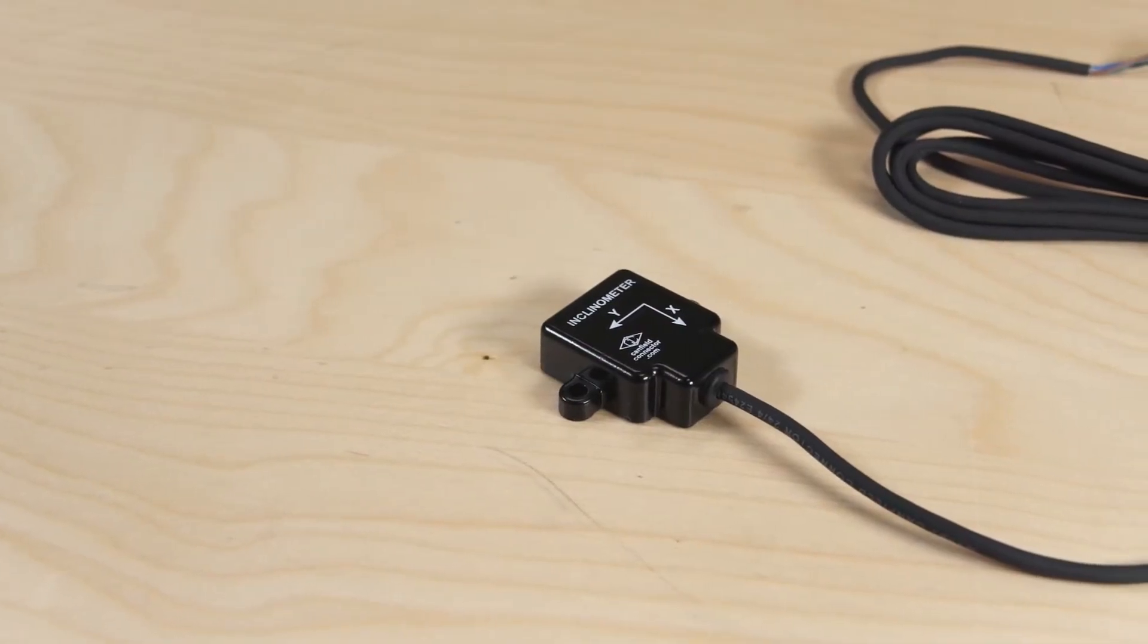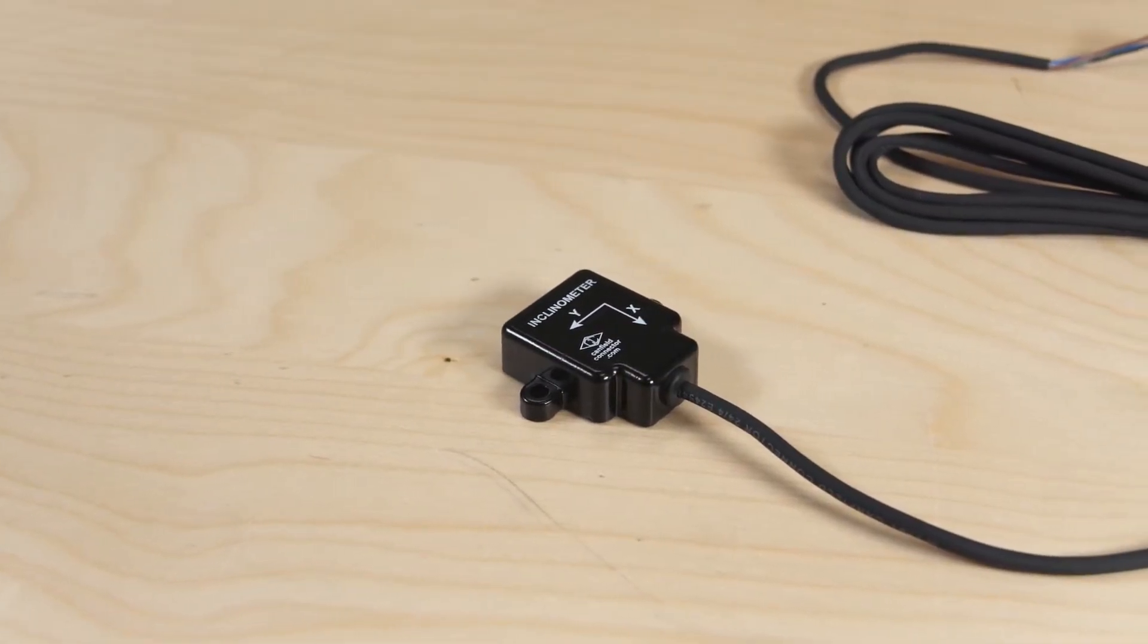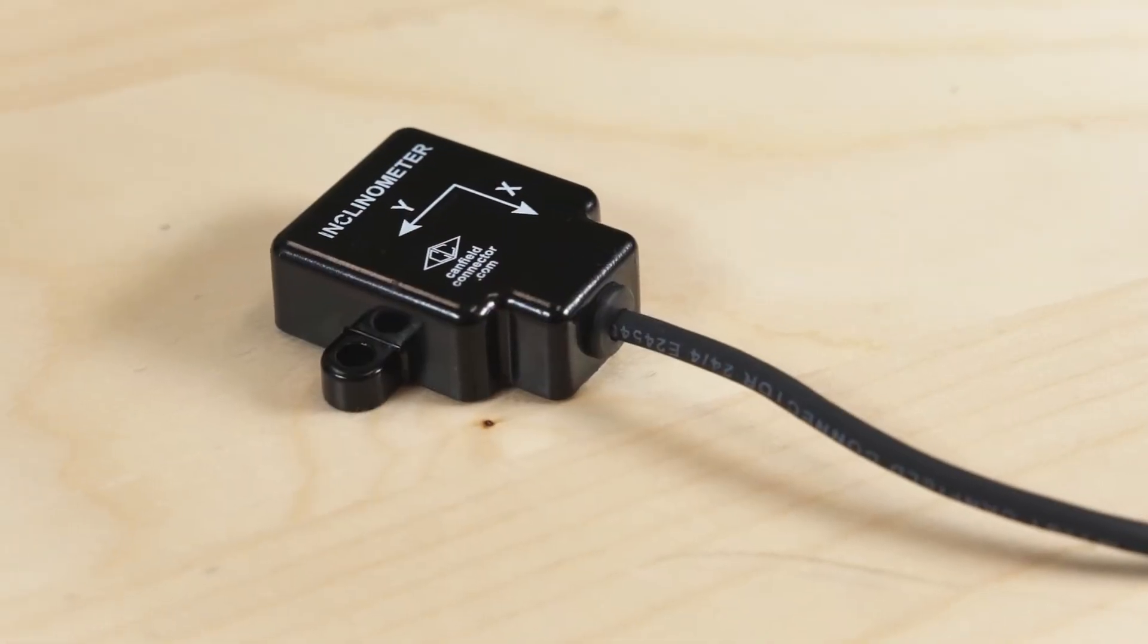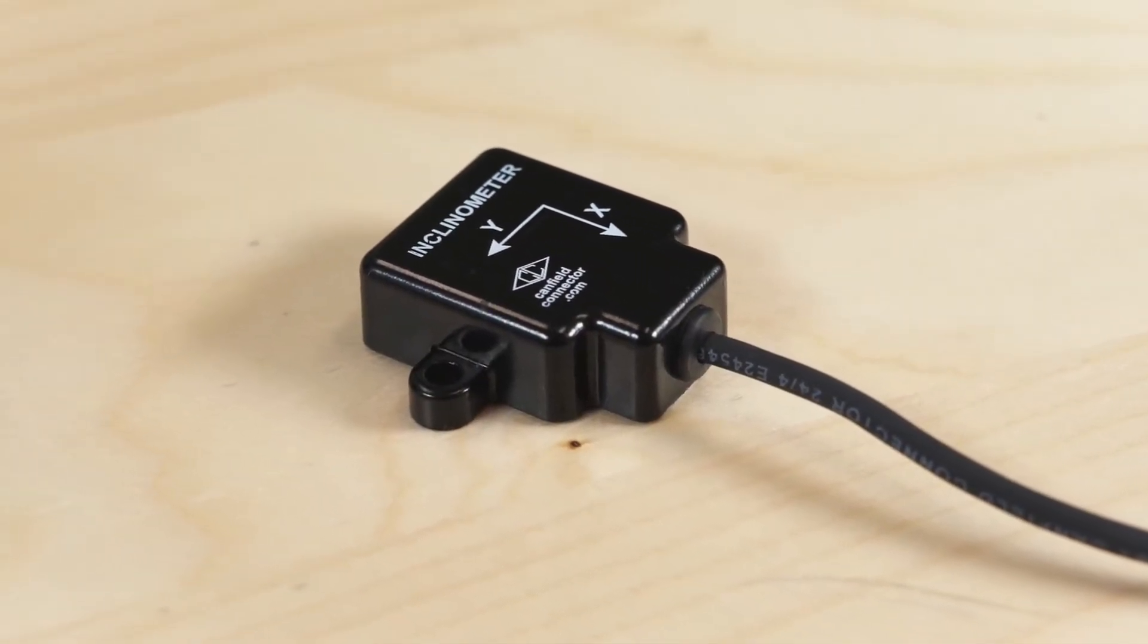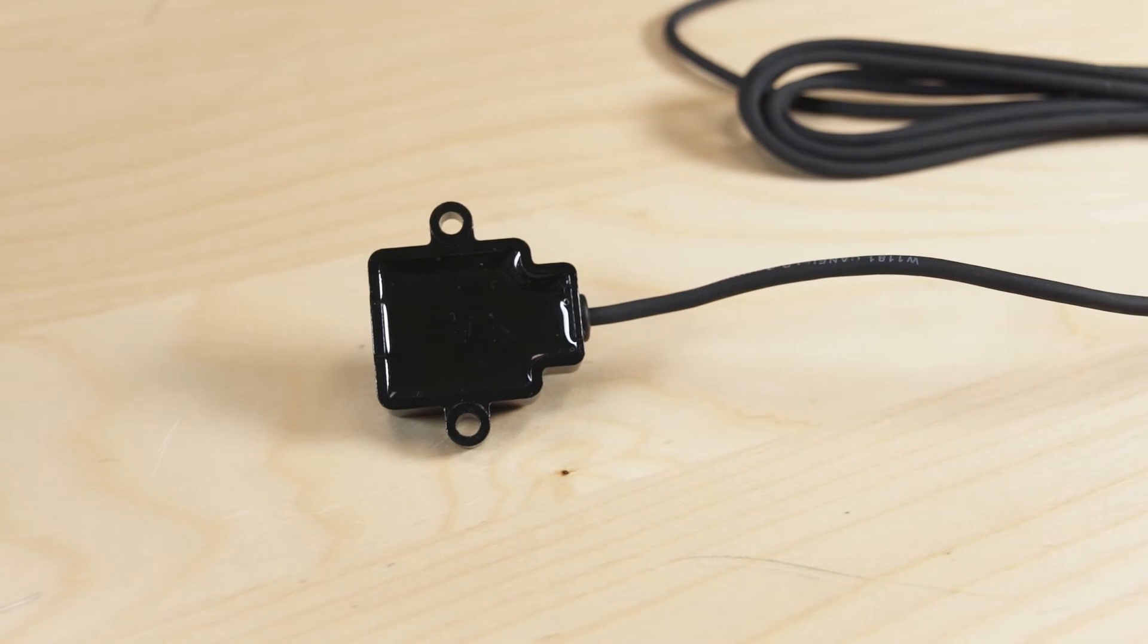It's one of Canfield's sensor products, correct? Yes, this is Canfield's electronic inclinometer sensor or EIS. It measures angles of slope or tilt of an object with respect to gravity based on an artificial horizon.